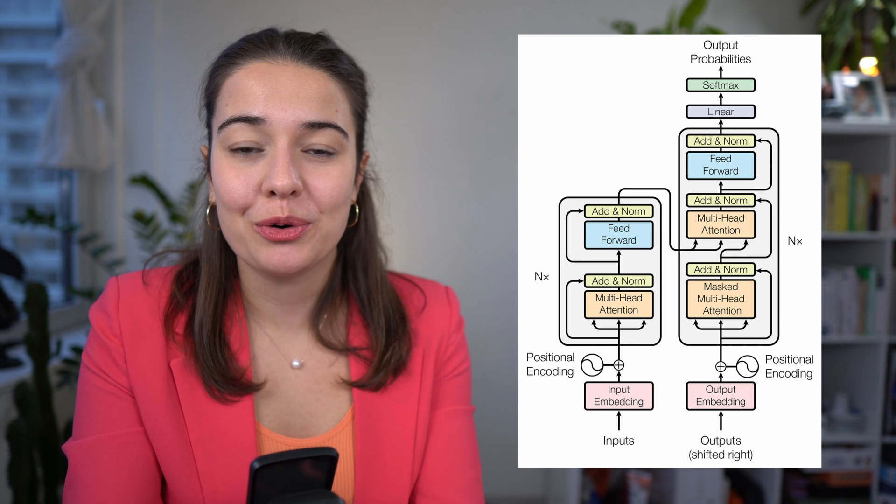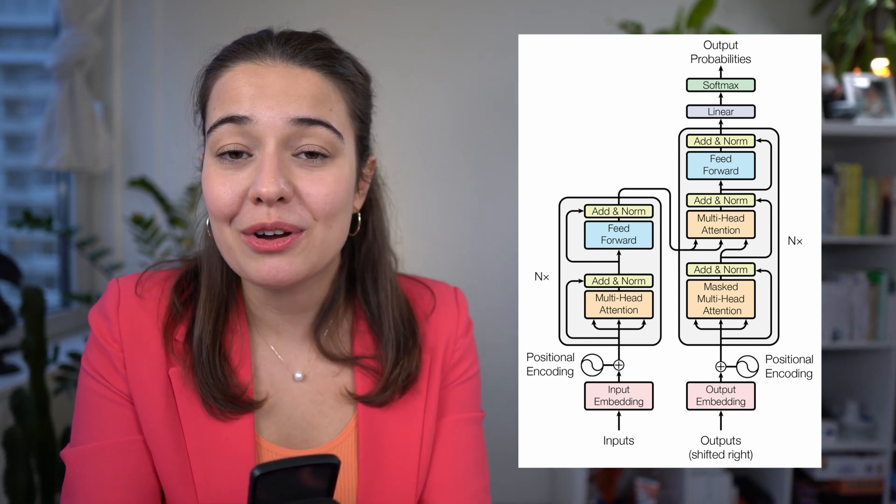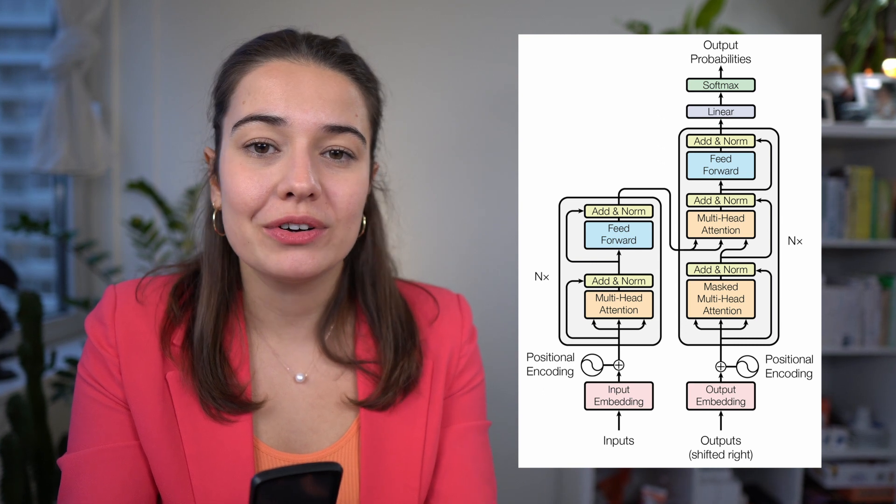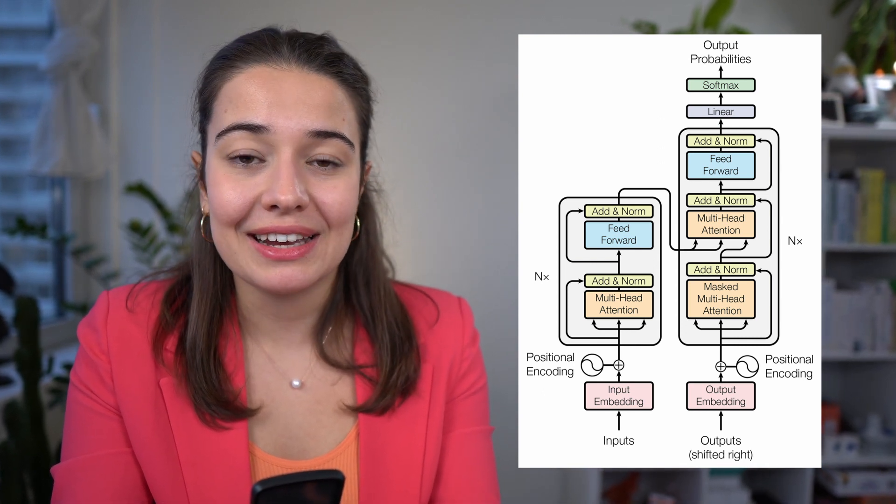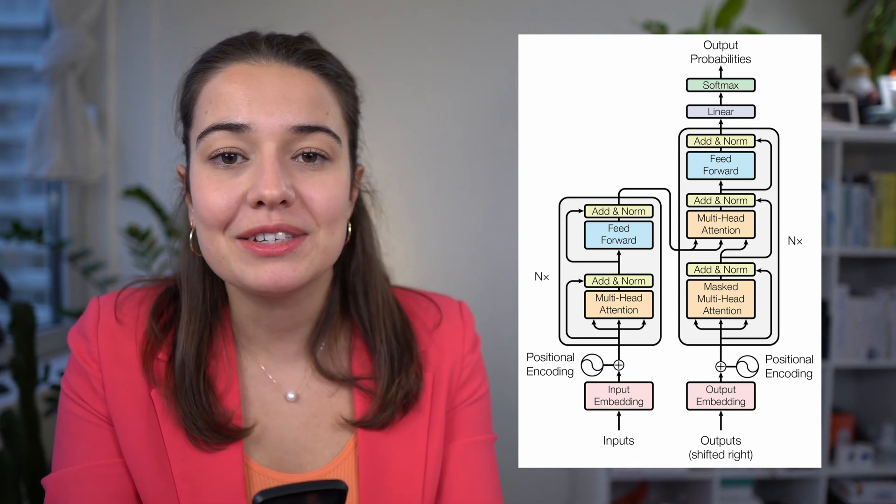That's all there is to know about transformers. Even though it looks complicated at first, all you need to know is that there are encoders and decoders, and the two novel ideas are positional encodings and multi-headed attention. To fully understand transformers, you might need to watch this video multiple times and support your learning with written resources — links are in the description. If anything was unclear, leave a comment. If you liked this video, give us a thumbs up and subscribe. Don't forget to grab your free token for AssemblyAI's Speech-to-Text API. See you in the next video.